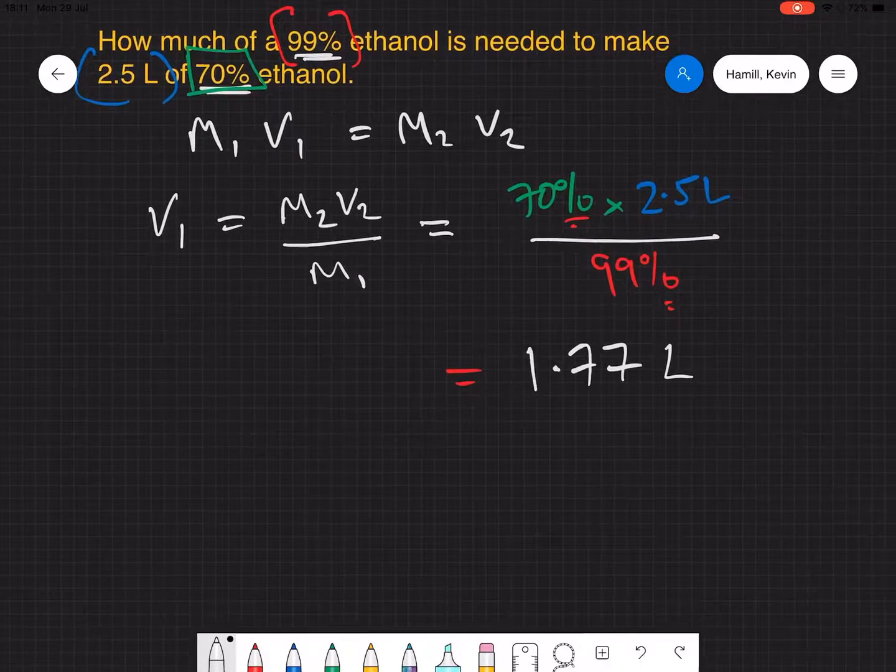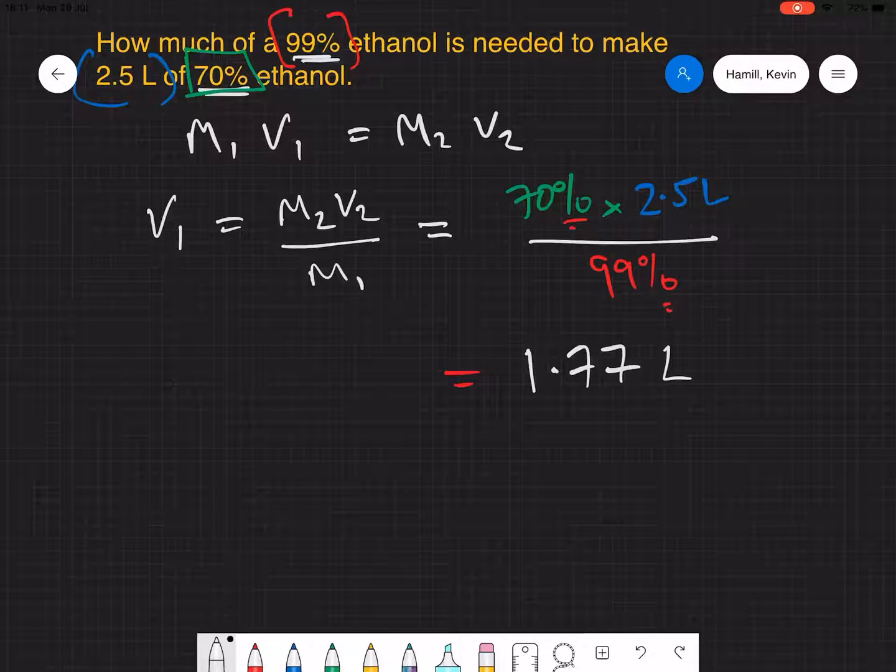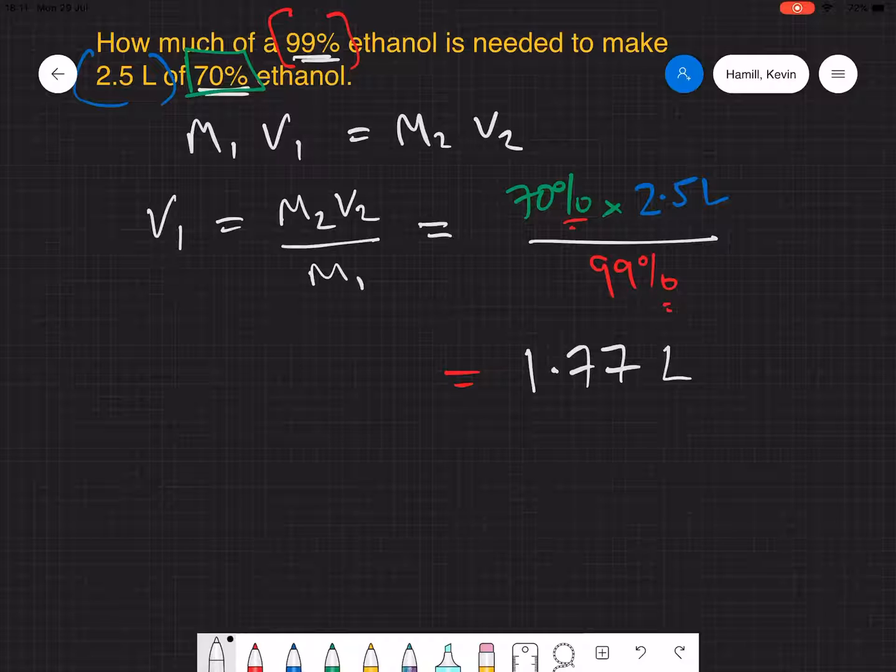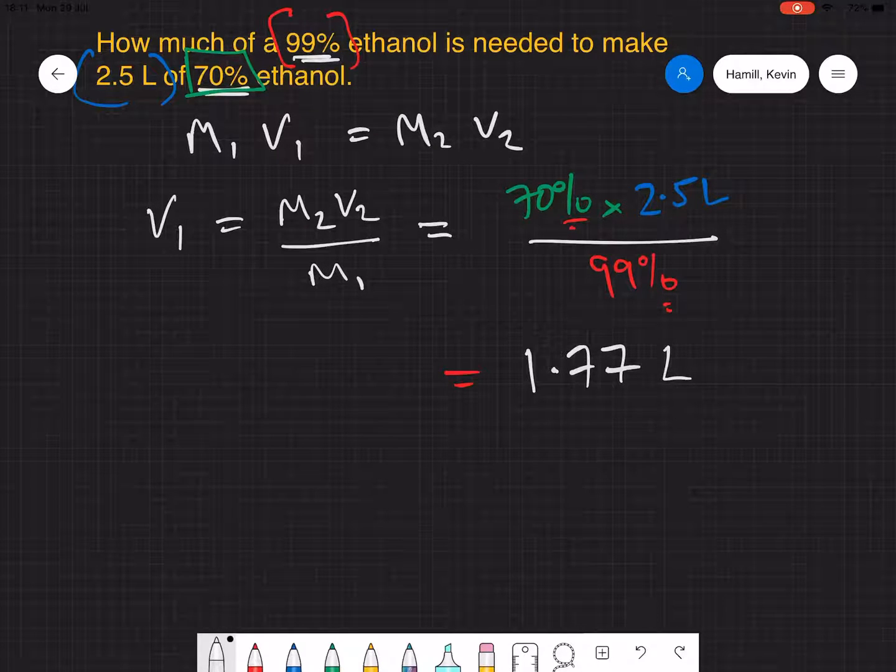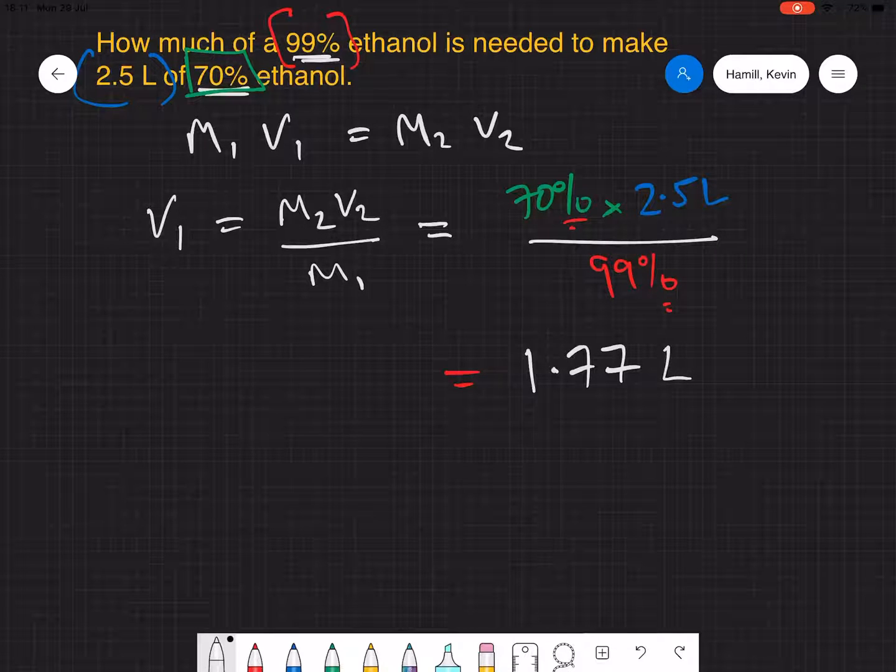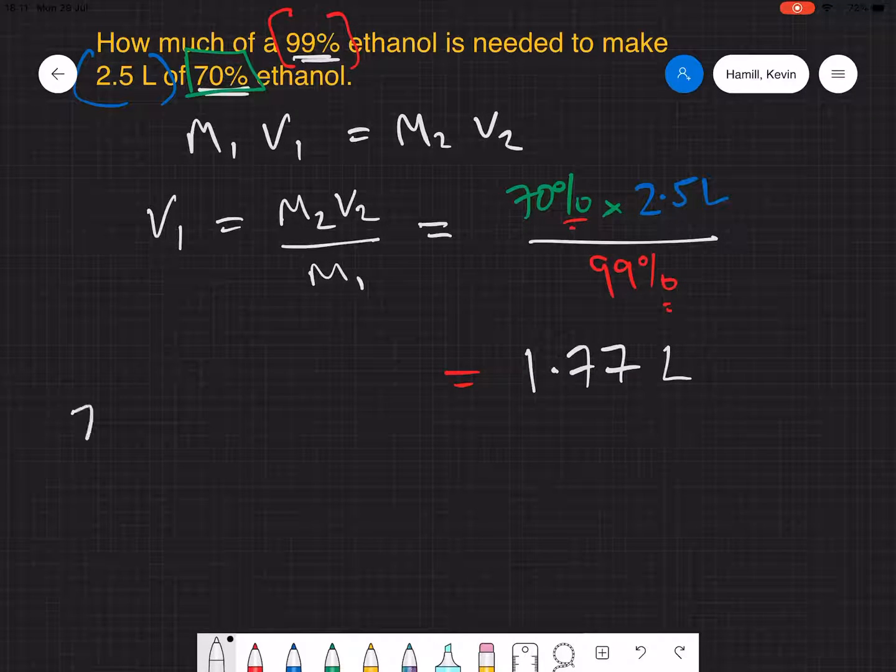Now when I do these sorts of things I like to do a quick calculation in my head to make sure the number I'm getting is at least close to where I want it to be. So in this case if I imagined it isn't 99% but instead it's 100%, then I need 70% of 100%,